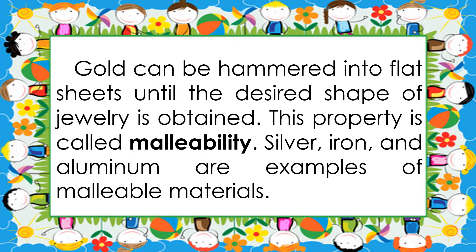Gold can be hammered into flat sheets until the desired shape of jewelry is obtained. This property is called malleability. Silver, iron, and aluminum are examples of malleable materials.